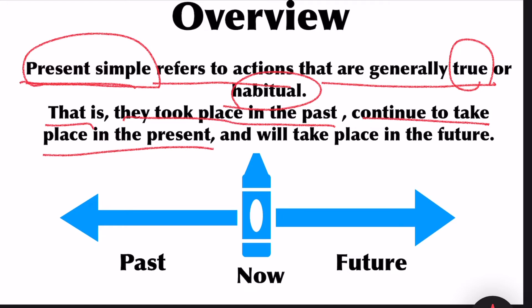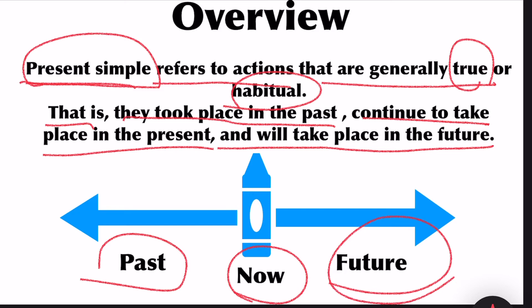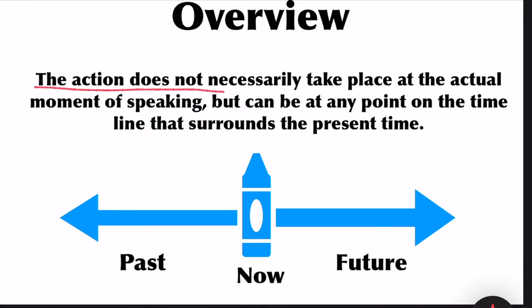It took place in the past, continues to take place in the present, and will take place in the future. So to express a true action or habitual action we have to use present simple tense. The action does not necessarily take place at the actual moment of speaking but can be at any point on the timeline that surrounds the present time.